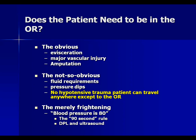Does the patient need to be in the operating room? Some cases are obvious: the patient is eviscerated, has a major vascular injury, or has an amputation — they're going there sooner rather than later. Sometimes it's not obvious. A patient may not meet those criteria but has increased fluid requirements, which should tip you off that they are losing blood, or may have mild pressure dips of concern. Those patients may have bleeding requiring the OR, and the source needs to be identified quickly.